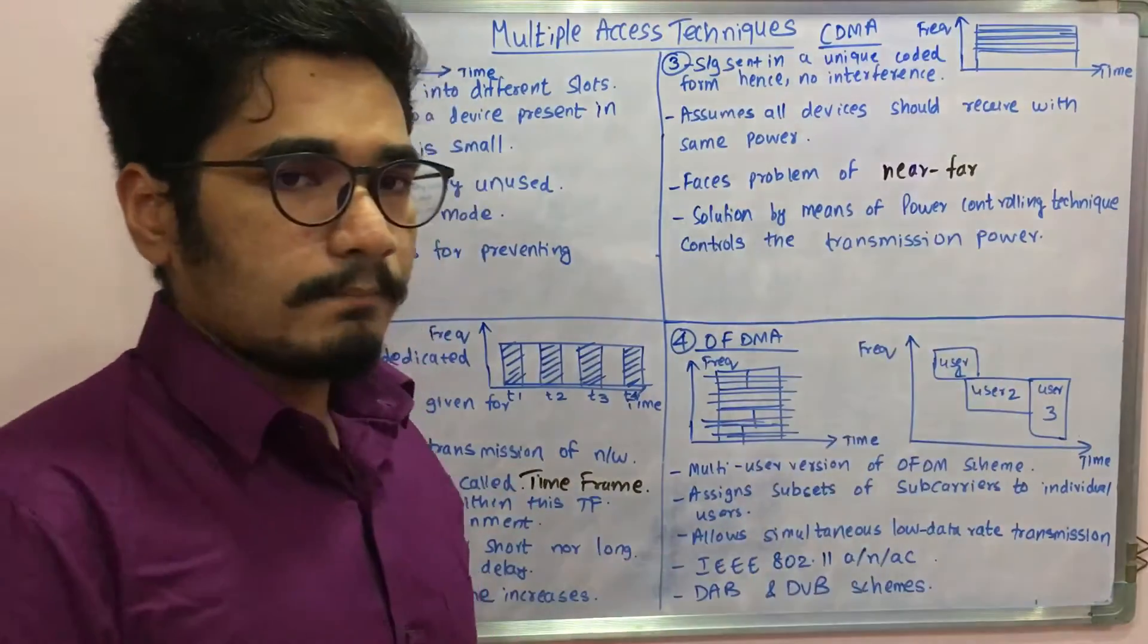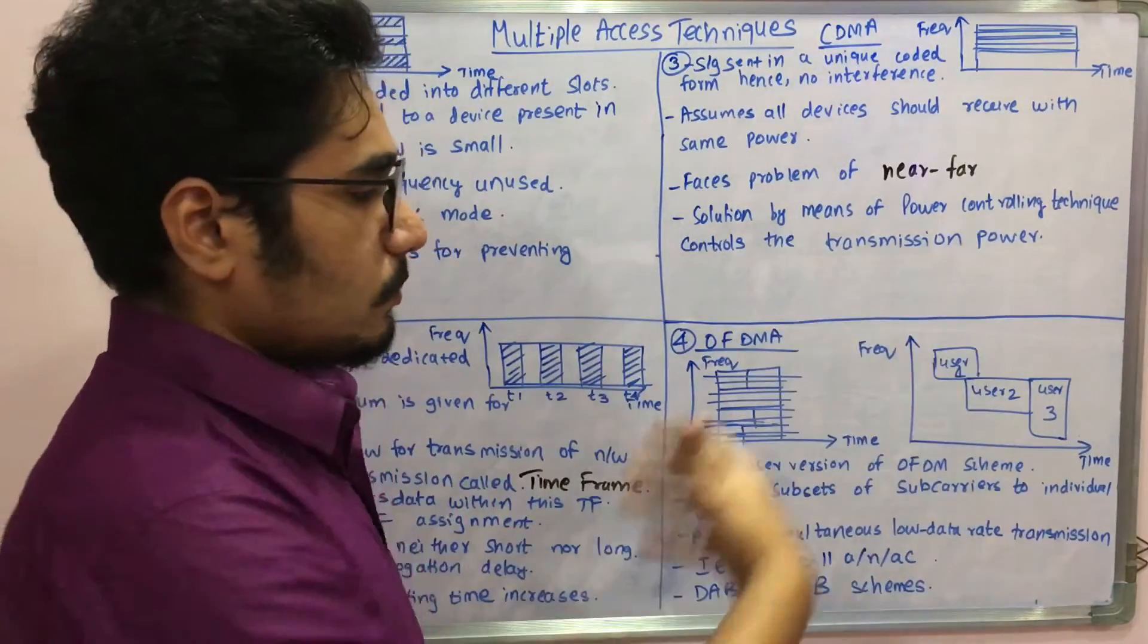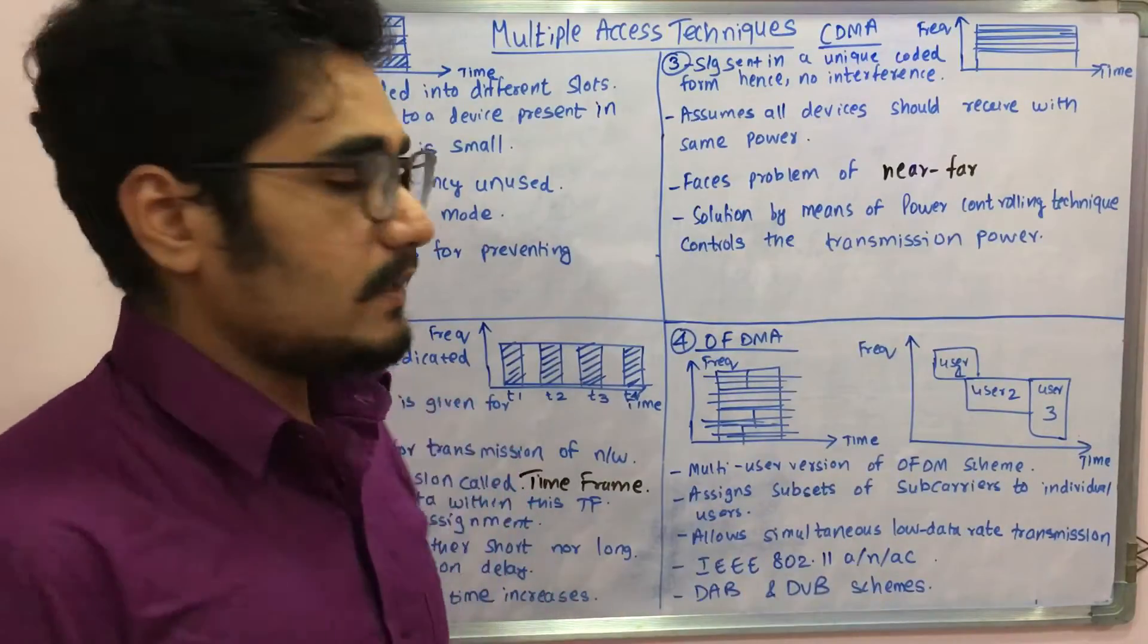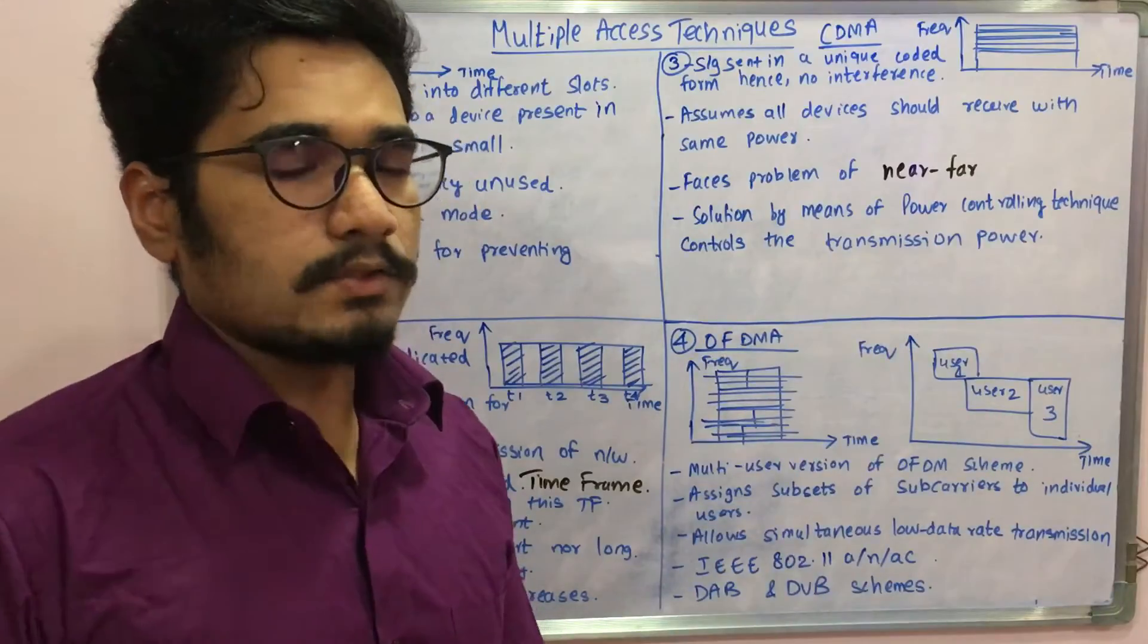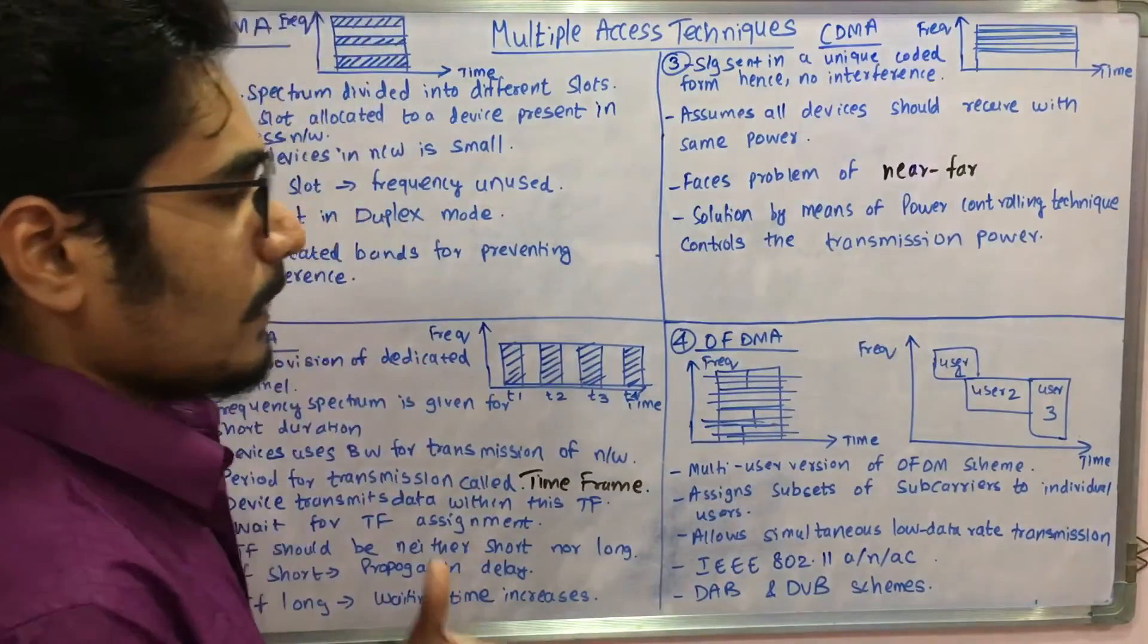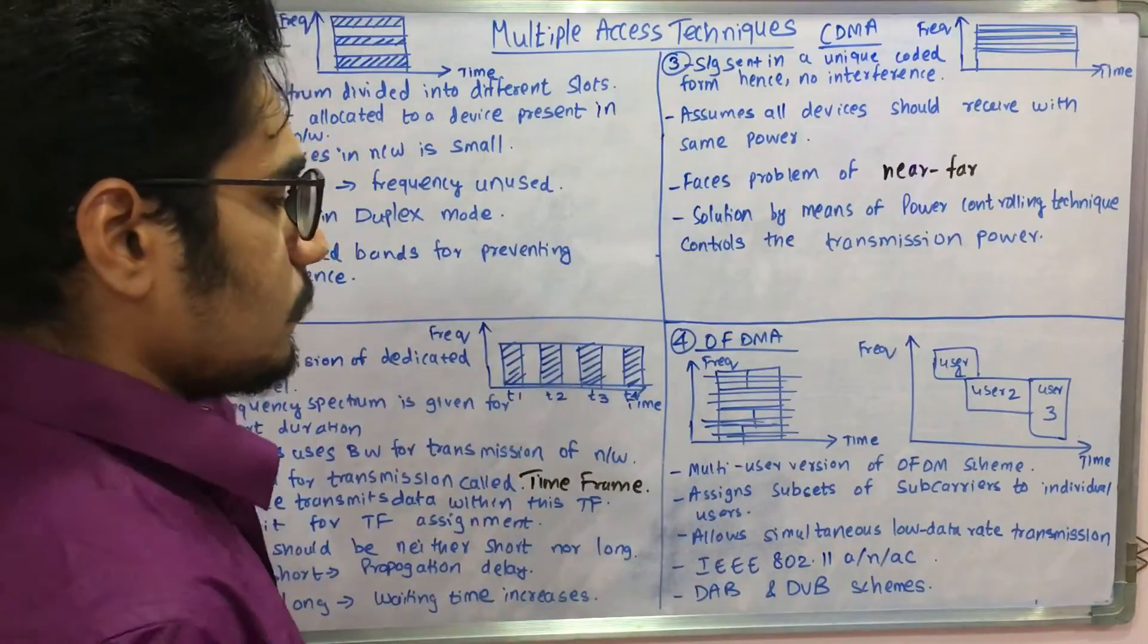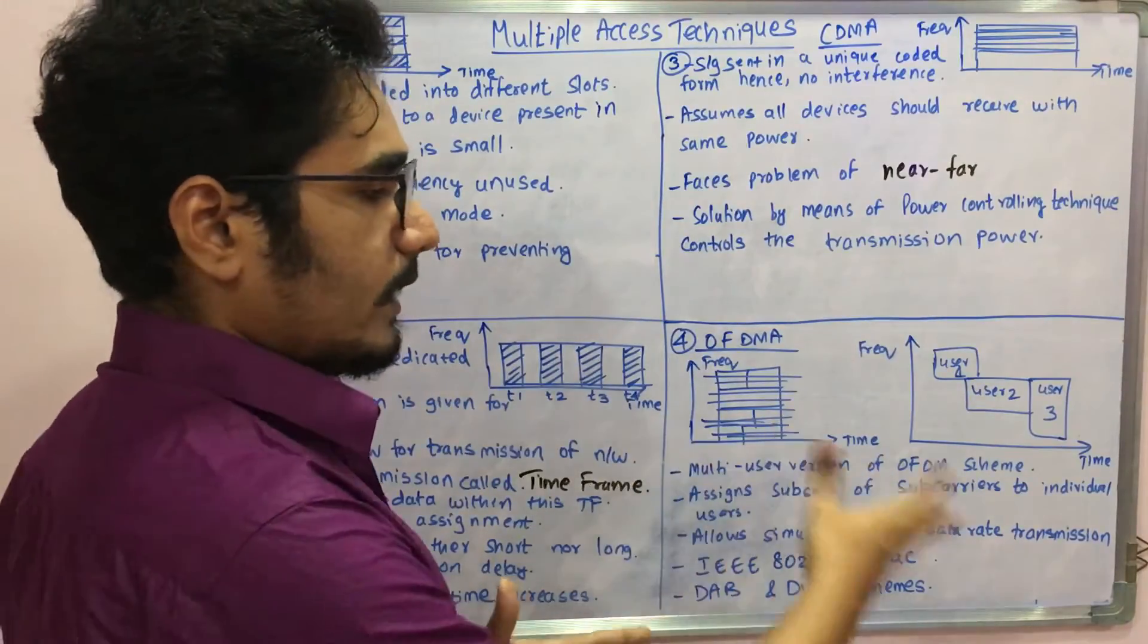Every user has been given some time, and so he can do n number of activities within that particular time. Then similarly, user two can come within that time and he can use it. There is no kind of interference or any kind of jamming due to the vicinity signals, and the access or data transfer can take place in a very good manner as compared to these other techniques.